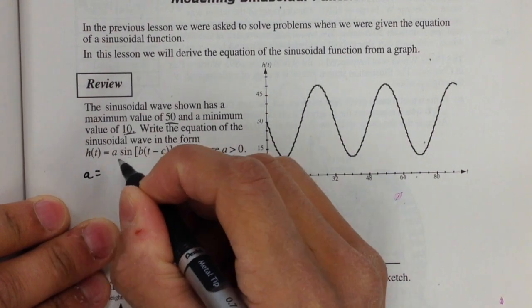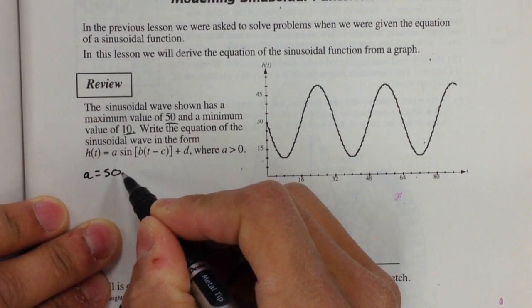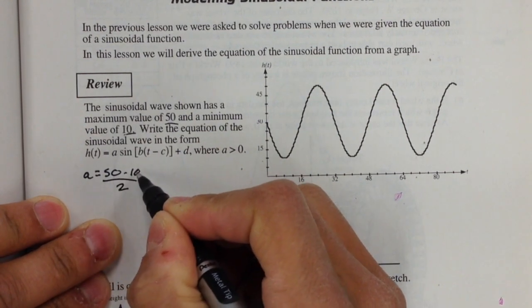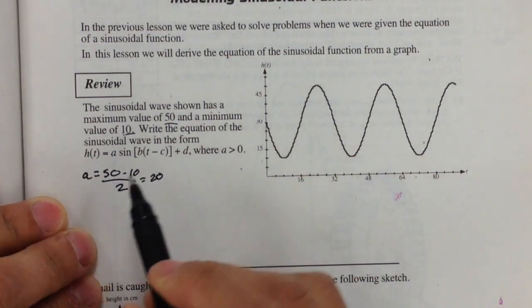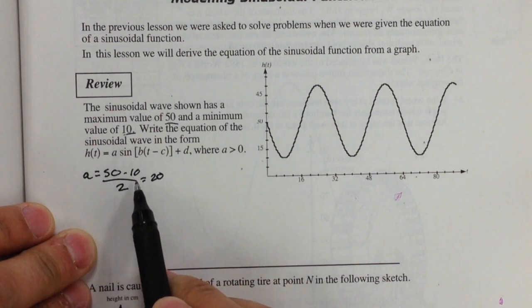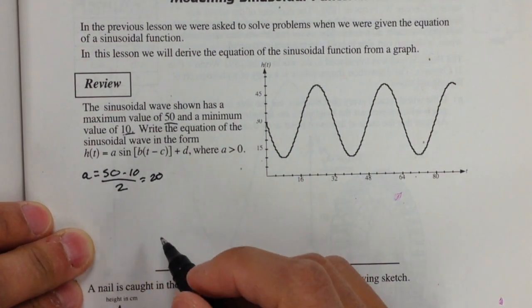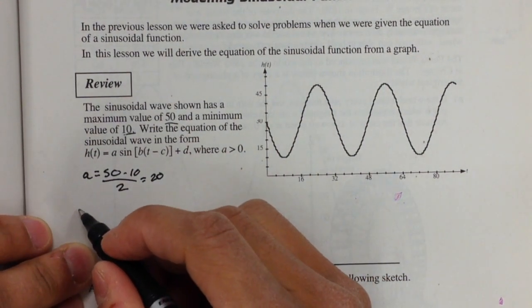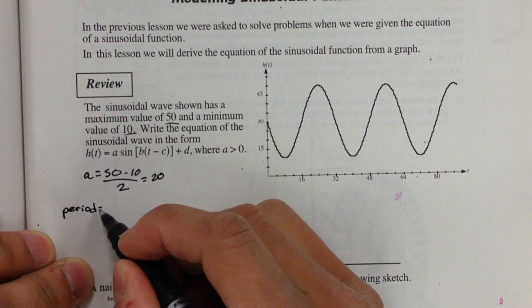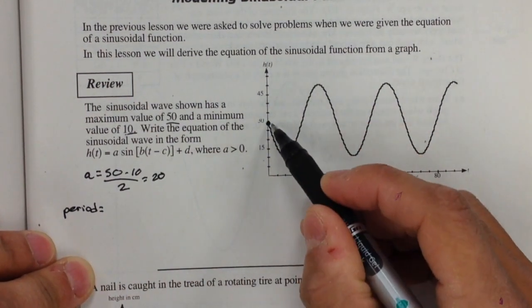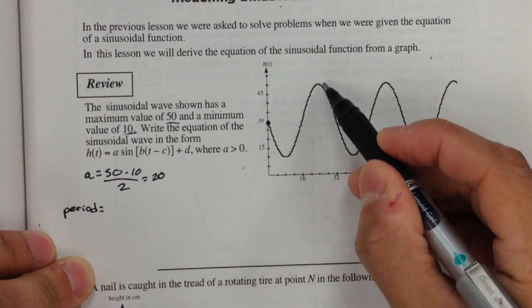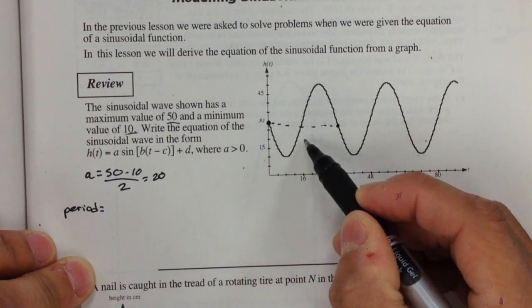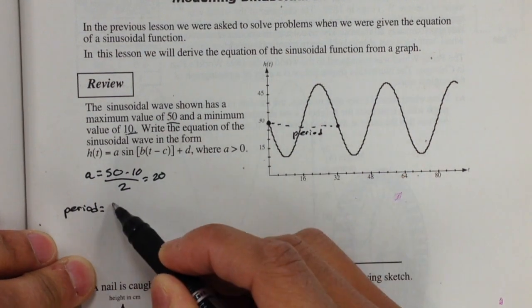In figuring out our amplitude, we know that we have a maximum of 50 and a minimum point of 10. So 50 minus 10 is 40 divided by 2 would give us an amplitude of 20. Our period, let's see where we have a repeated motion. I go down the graph, I go back up, and then I go back down. So here is my period, and that's equal to 32.